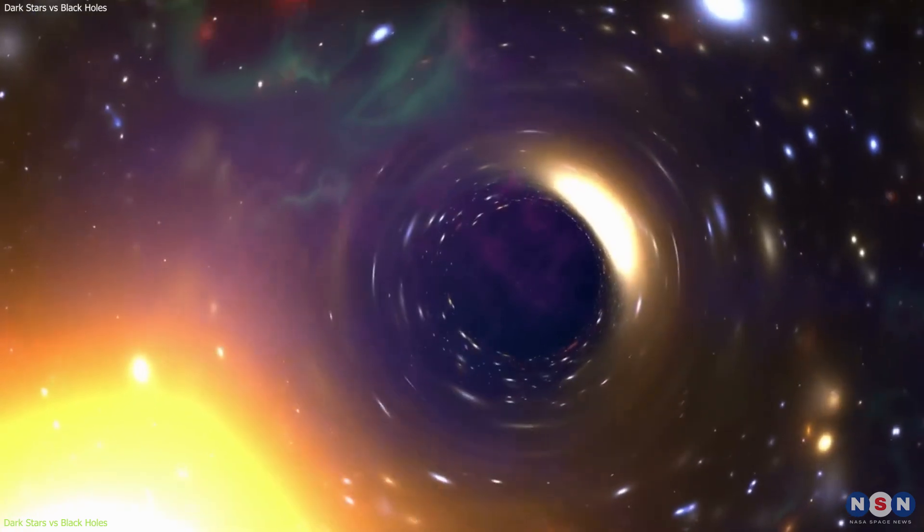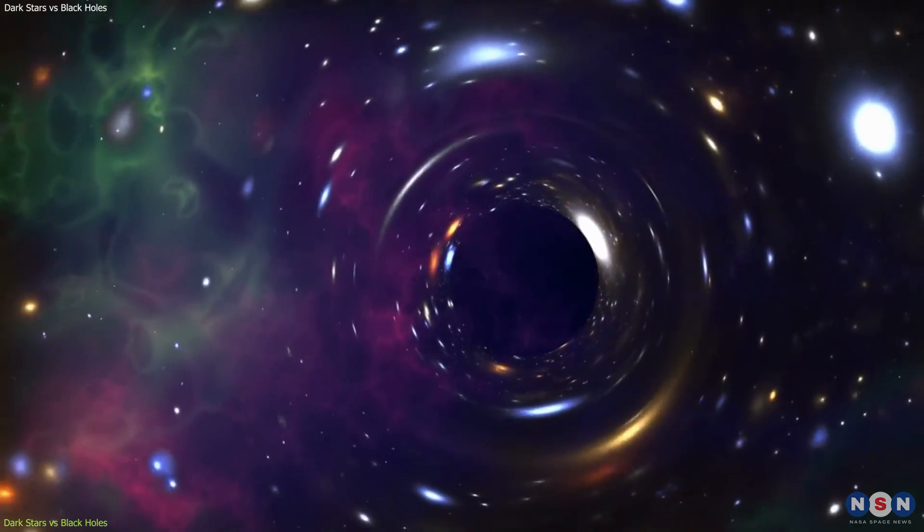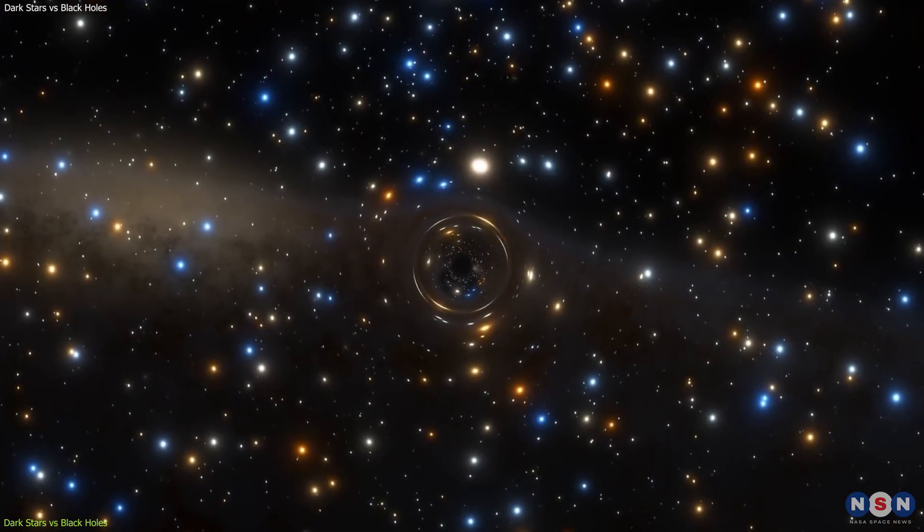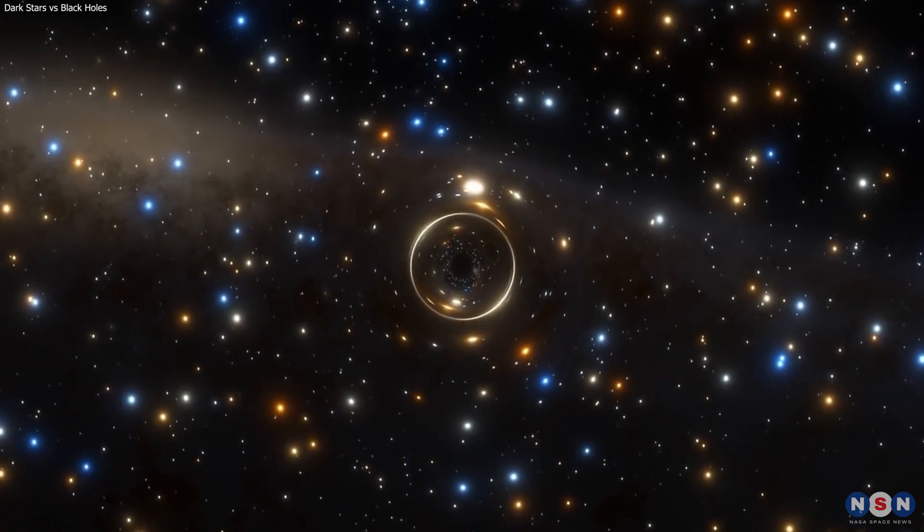These are some of the main differences between dark stars and black holes that make them unique objects in the universe. But how do we know about these differences? And how can we study these objects if they are so hard to detect?